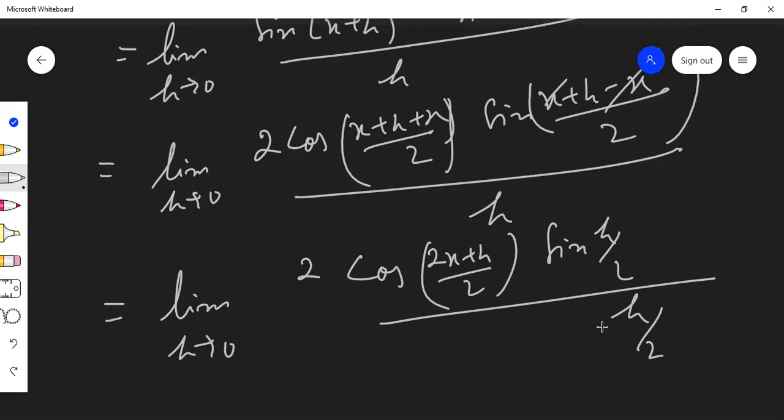h by 2 by h by 2. So, if we have h by 2 made up, we might multiply this by 2. Then multiply by 2 by 2.